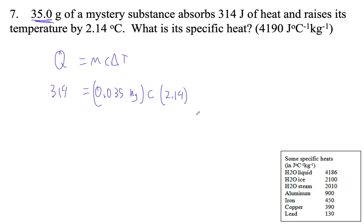Okay, so 314 divided by 0.035 divided by 2.14 is 4192, and that is joules per kilogram degrees Celsius.